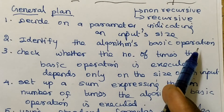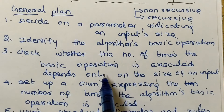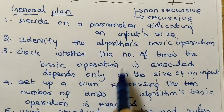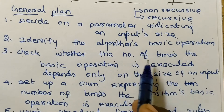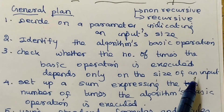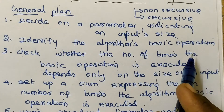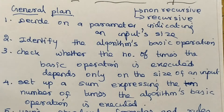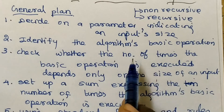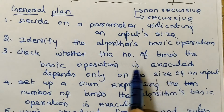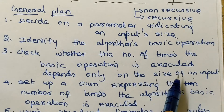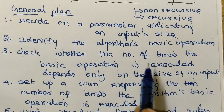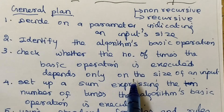Once the basic operation is identified, we have to check the number of times the basic operation is executed. The basic operation's execution count depends only on the size of the input. We will check the number of times and see how to analyze the basic operation.